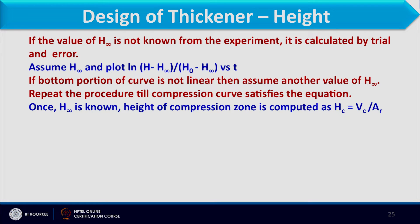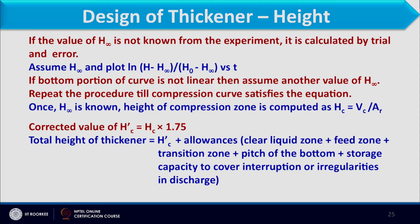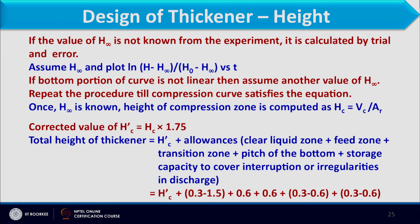Once H∞ is known, the height of the compression zone is calculated as Hc = Vc / AR, that is the volumetric volume of the compression zone divided by the cross-sectional area. The corrected height of the tank is Hc-dash = Hc times 1.75, where 1.75 is the correction factor. Total height of the thickener is Hc-dash plus allowances for the clear liquid zone, feed zone, transition zone, pitch of the bottom, and storage capacity for interruptions in discharge.